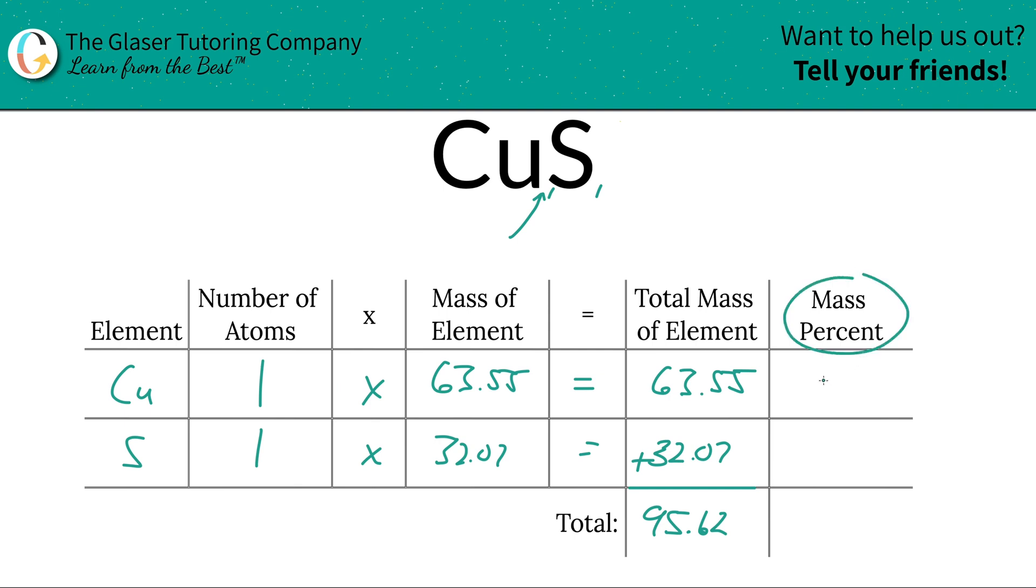Bam. So to find that mass percent of, let's say, copper, we're going to take the total mass of copper here and divide it by the total mass of the compound. It just so turns out that total mass of copper here is the same as its molecular or molar mass. That's only because there's only one copper atom. Same thing for sulfur. But don't look at this column when you're calculating. Look at this column.